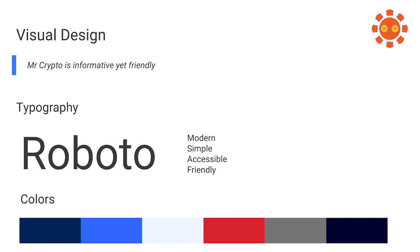The typography we're choosing to use is Roboto, because we were going for a modern, simple, accessible, and friendly feel. The colors we decided to choose are mainly blue with a tad of red just to show warnings, because blue is seen as a trustworthy color for pretty much anything.